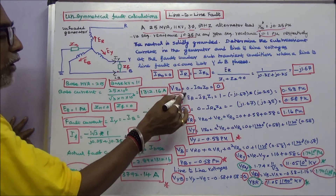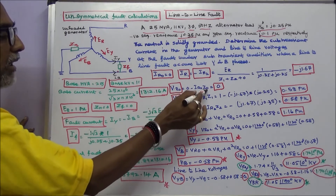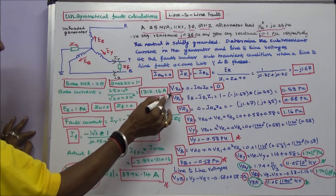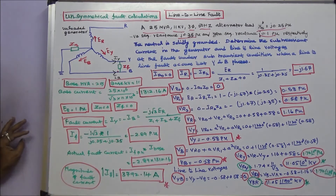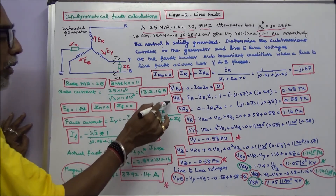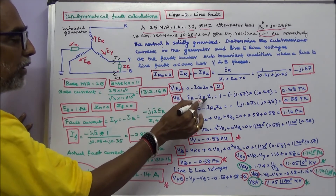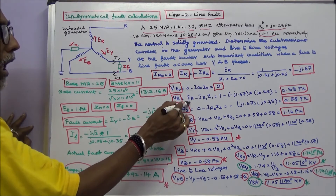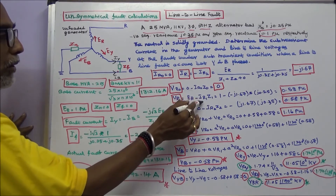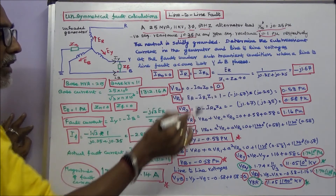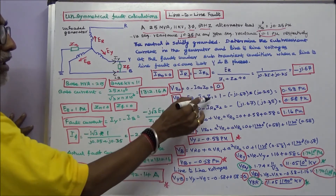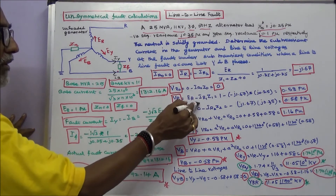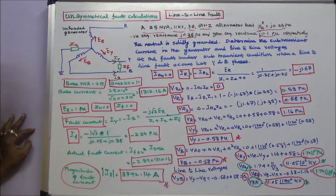VR0 is equal to Z1 into IR0. Since IR0 is 0, therefore VR0 is equal to 0. VR1 is equal to ER minus IR1 into Z1. ER is equal to 1, IR1 is equal to minus j1.67, Z1 is equal to j0.25. Substituting all the values in this equation, VR1 is equal to 0.58 per unit.